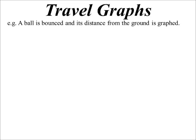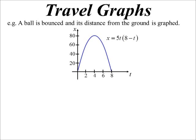So our ball is bounced and its distance from the ground is graphed. And we end up actually with a lovely parabola. And so it's distance versus time. The actual equation of that particular parabola is 5t, 8 minus t.